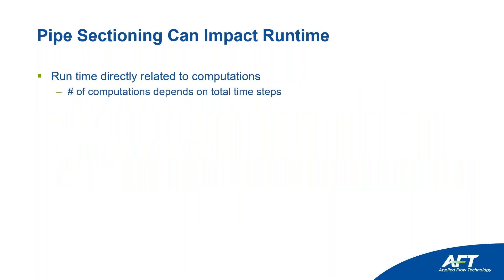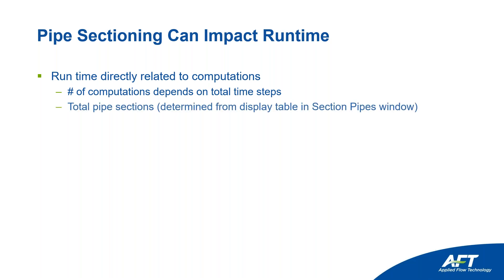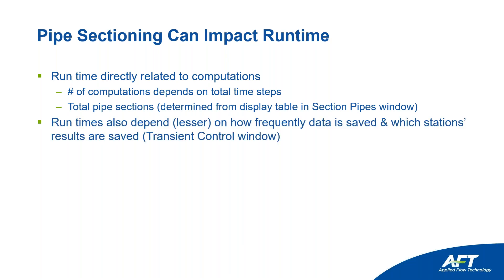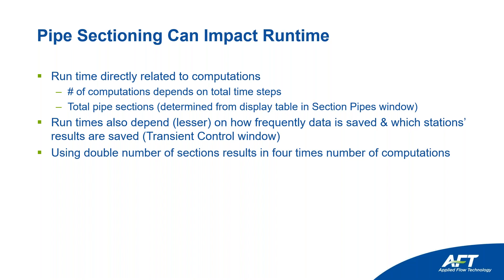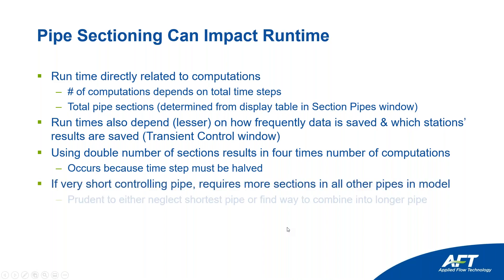Your runtime is directly related to the number of computations — more sections leads to more time steps and more calculations. Importantly, if you double the sections in your controlling pipe instead of using one section, that leads to four times the number of computations because the time step gets cut in half. So comparing a 10-foot pipe to a 10,000-foot pipe: going from one to two sections in the short pipe makes every pipe's sections half as long, potentially making your model run four times longer.